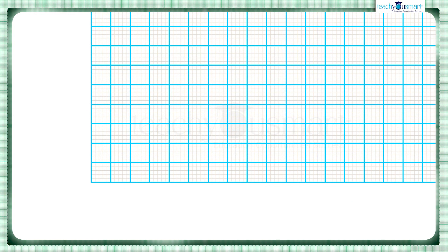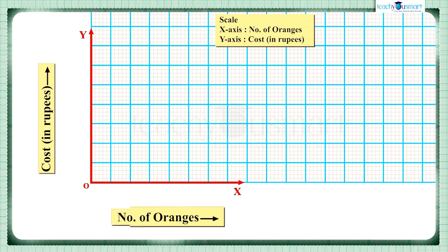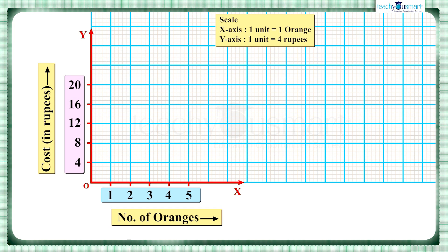Let's take the independent variable, that is the number of oranges, along the x-axis and the dependent variable, cost of oranges, along y-axis. We take one unit on the x-axis which represents one orange and one unit on y-axis which represents four rupees.